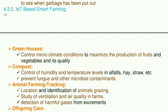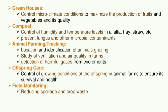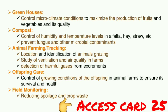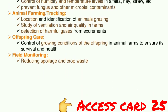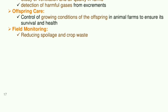IoT-based smart farming: Greenhouses use IoT to control microclimate conditions to maximize the production and quality of fruits and vegetables. Compost management controls humidity and temperature levels in alfalfa, hay, straw, etc., to prevent fungus and other microbial contaminants. Animal farming tracking covers location and identification of grazing animals, study of ventilation and air quality in farms, detection of harmful gases from excrements, and control of growing conditions of offspring in animal farms to ensure survival and health. Field monitoring focuses on reducing spoilage and crop waste.